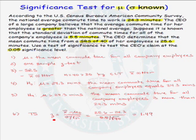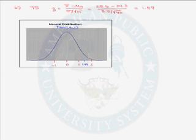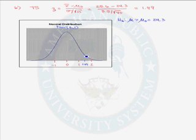We now need to sketch the sampling distribution of our test statistic and compute the p-value. Our test statistic is 1.49, and z has a normal(0,1) distribution. Since the alternative is that mu is greater than 24.3, we have a one-sided test. The p-value represents all values more extreme than our test statistic — the shaded region to the right of 1.49.